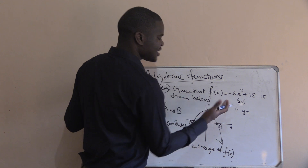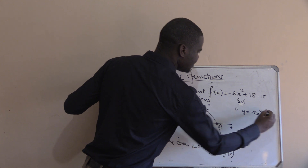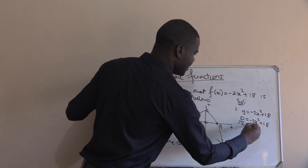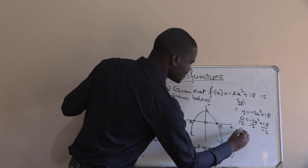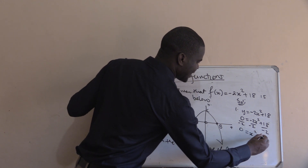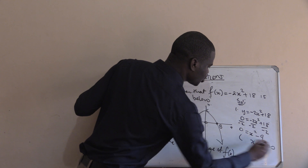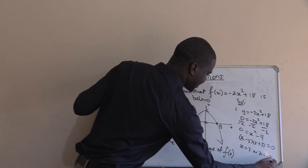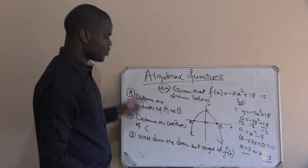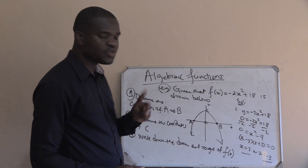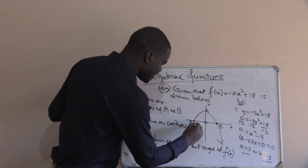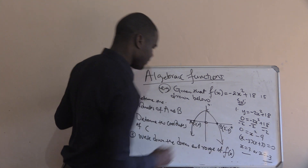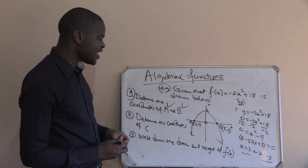For the x-intercepts, f(x) is just another name for y. Replace y with zero: 0 = -2x² + 18. Divide everything by minus two: 0 = x² - 9. Factorize to get (x - 3)(x + 3) = 0, so x = 3 or x = -3. A is on the left, so coordinate A is (-3, 0) and coordinate B is (3, 0).